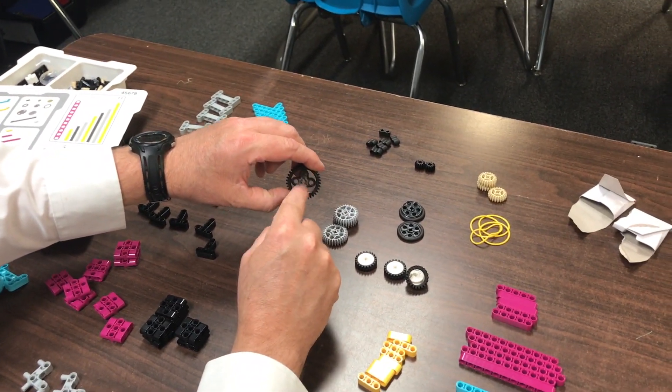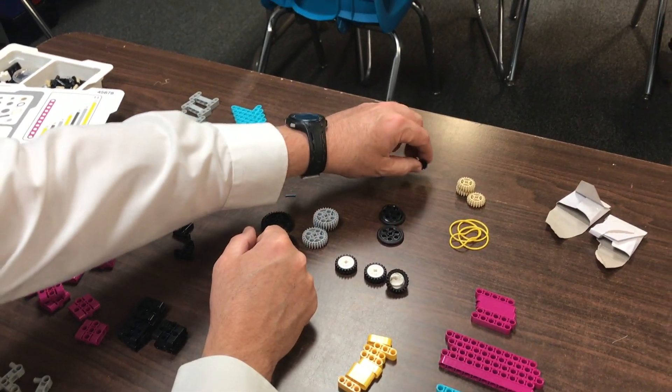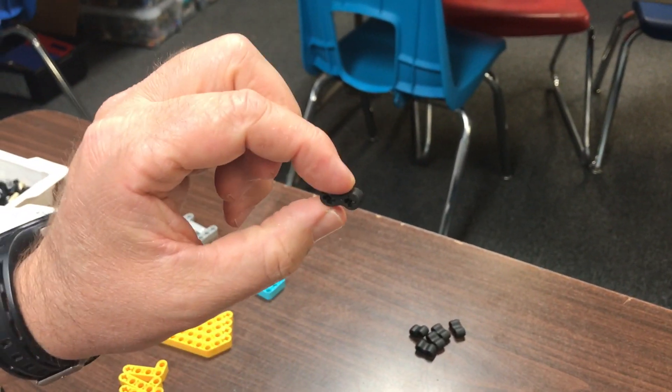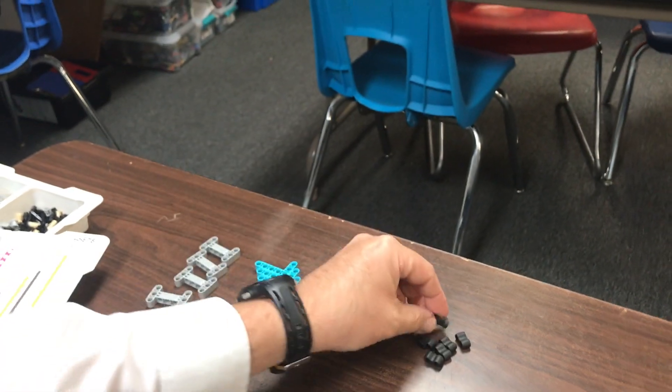You do have some pinholes and axle holes that you can attach. The smallest gears and these little flex beams are good for putting axles through and they're also sort of grippy.